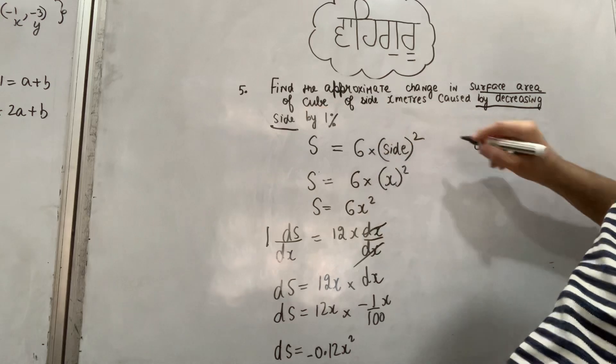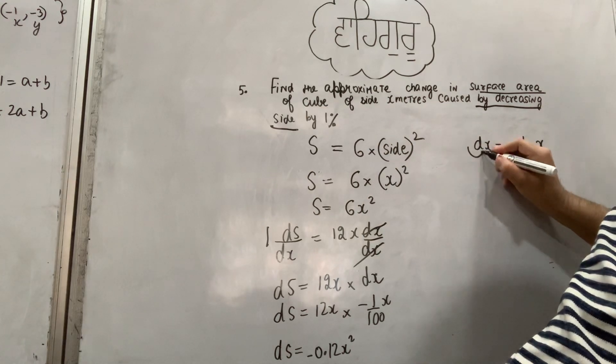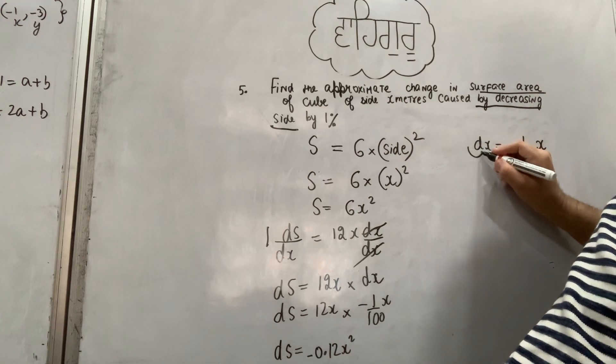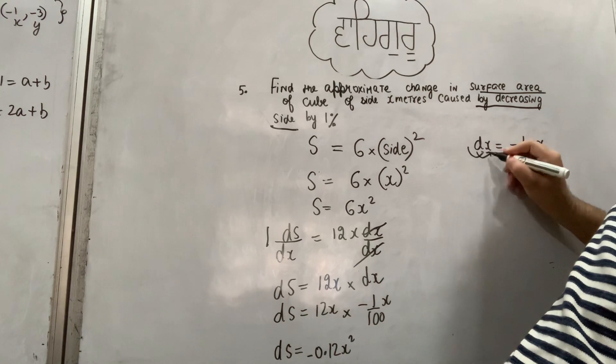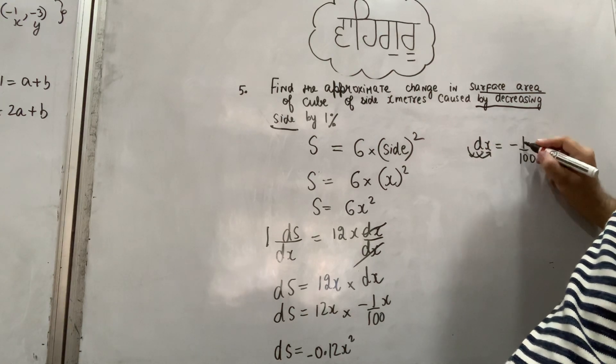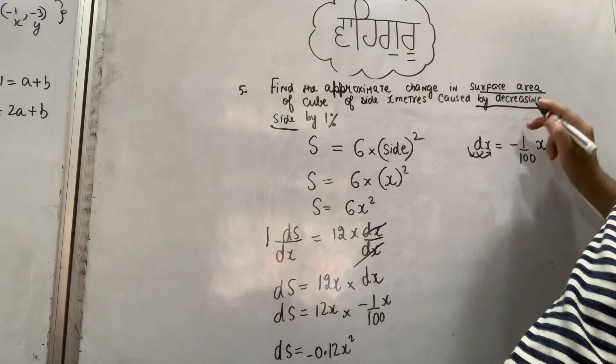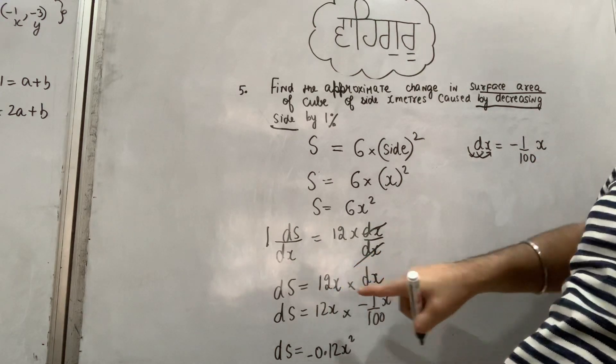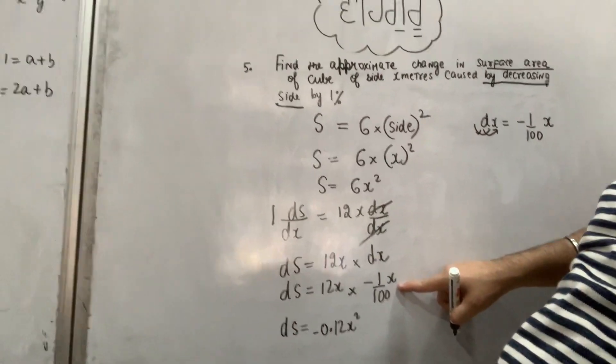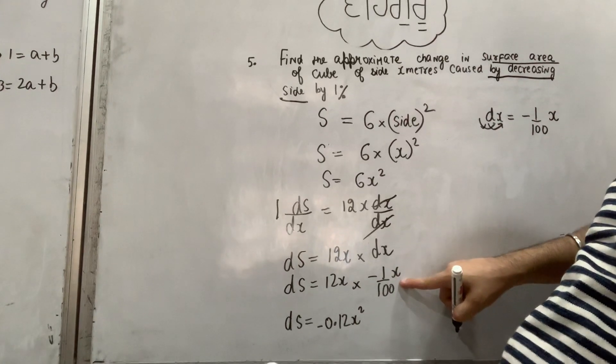The side is decreasing by one percent, which means the change in side x, dx, is minus 1% of x. Since it is decreased, dx = -1/100 × x.